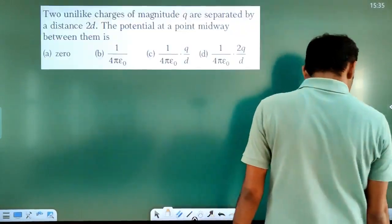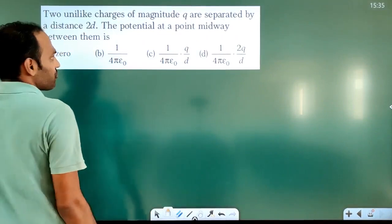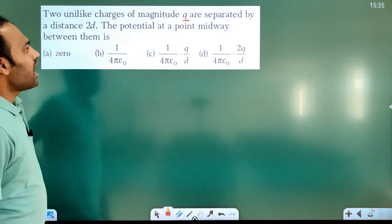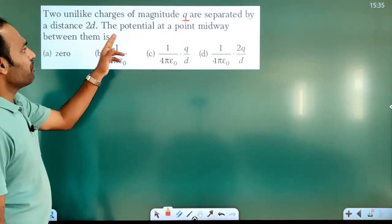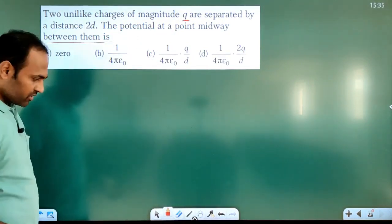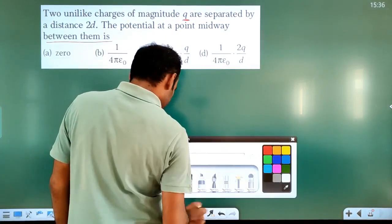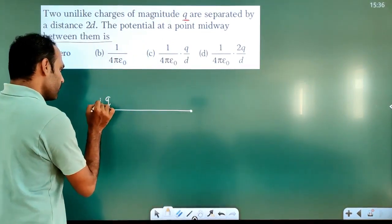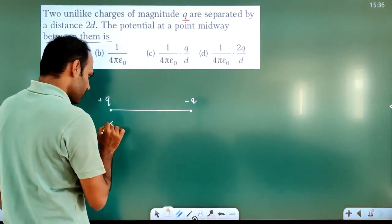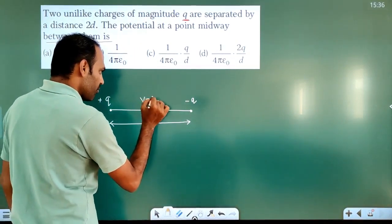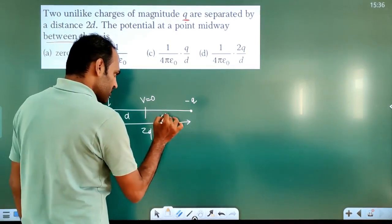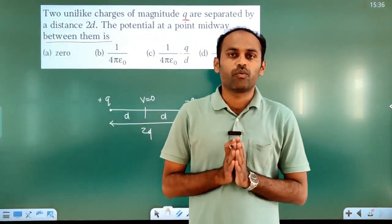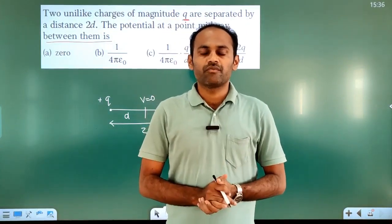Next question: two unlike charges of magnitude Q — one plus Q and one minus Q — are separated by a distance 2D. The potential at a point midway between them is? Since the magnitudes are equal and they are unlike charges, the midpoint will have zero potential. At distance D from plus Q and distance D from minus Q, the midpoint potential is zero. That is how we find the zero potential point. Thank you and keep watching for further concepts.